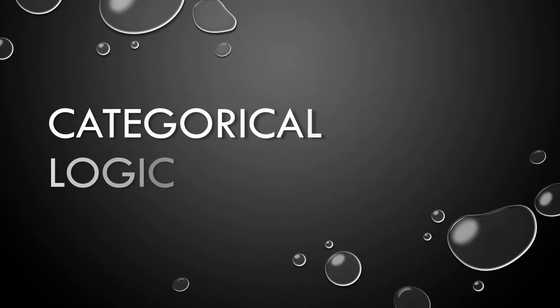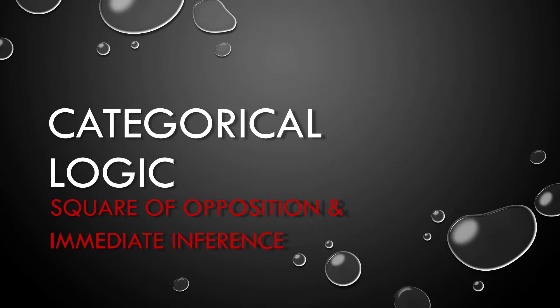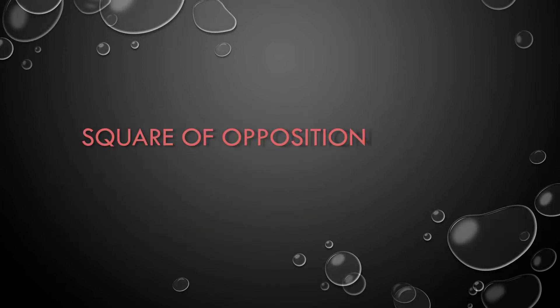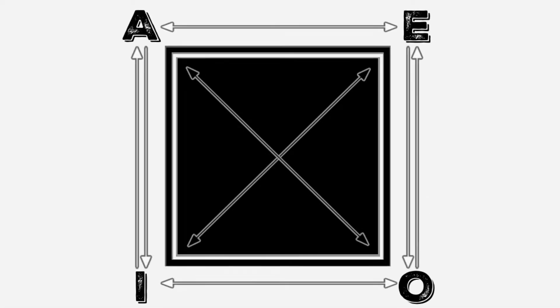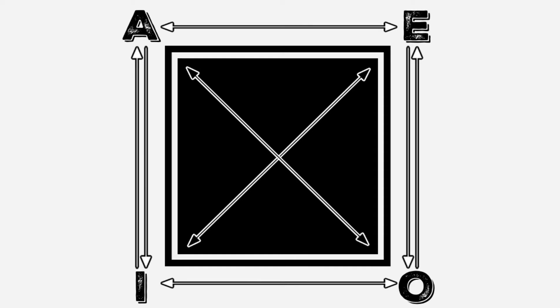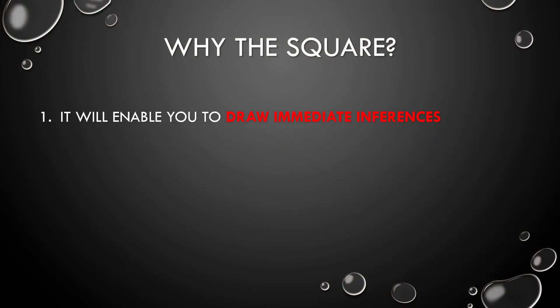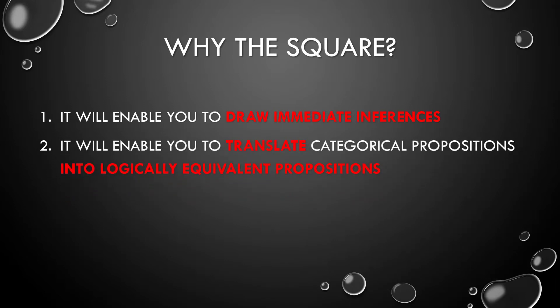Starting with the square of opposition and immediate inference — the first is a tool, the second something we'll be able to make or draw with that tool. We have a square, and it might look ordinary, but this is a special square because we're going to use it to illustrate the various relationships that exist between the four types of categorical propositions. It's actually pretty simple, and if you memorize it — especially with its perfect balance and symmetry — it's going to make two tasks much less difficult: drawing immediate inferences from categorical propositions, and translating any categorical proposition into a logically equivalent proposition.